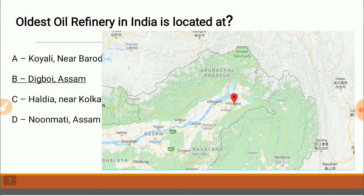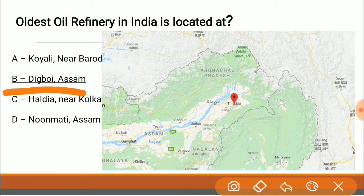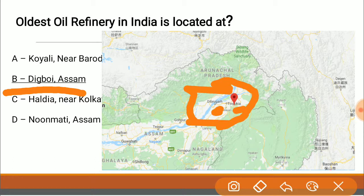The oldest oil refinery in India is located at Digboi in Assam. The place is situated near Tinsukia. On the map, you can see Dibrugarh and Tinsukia, which makes the location quite clear.